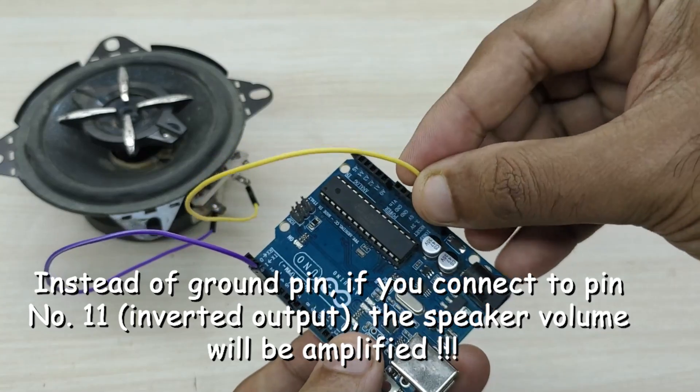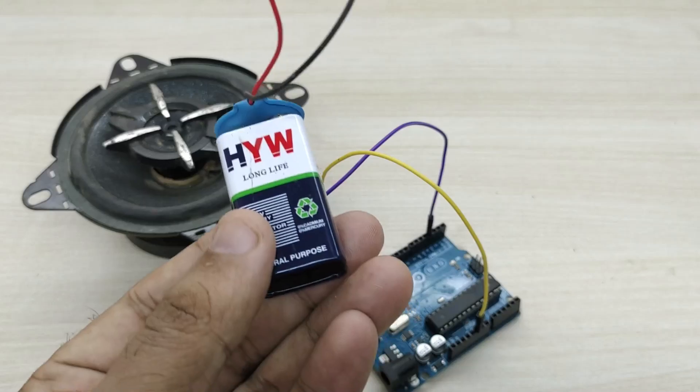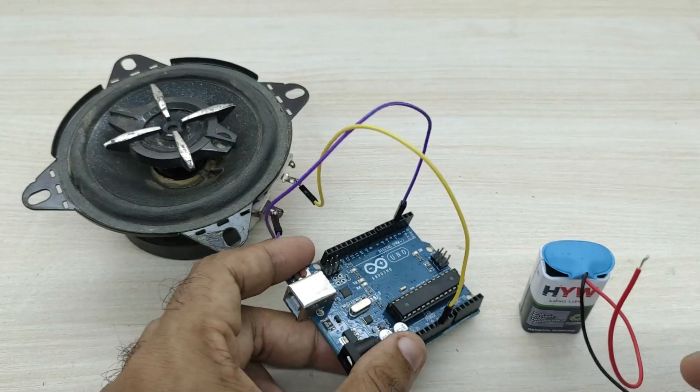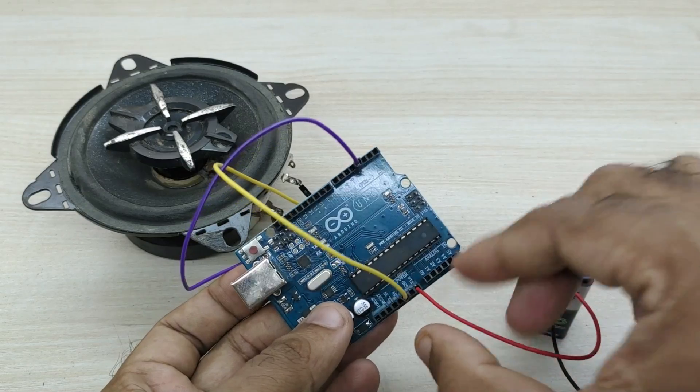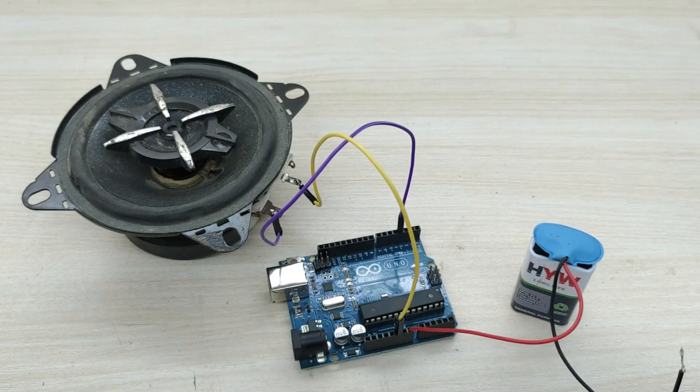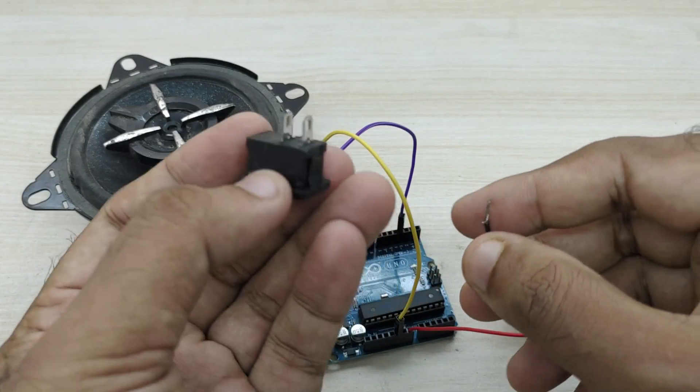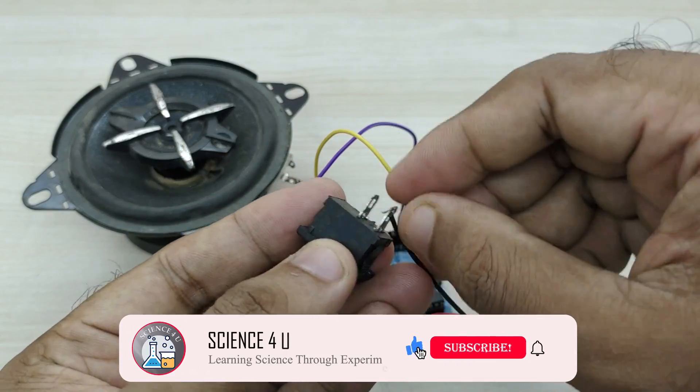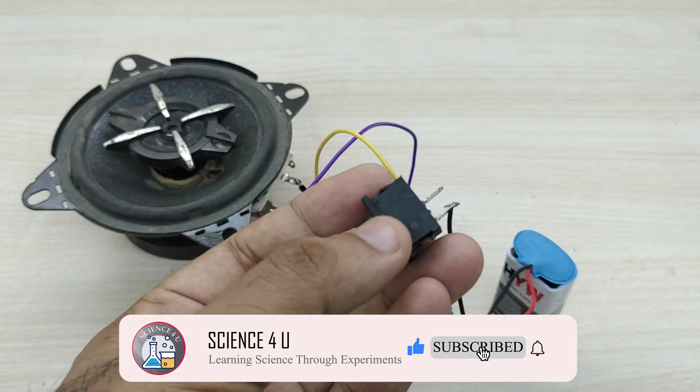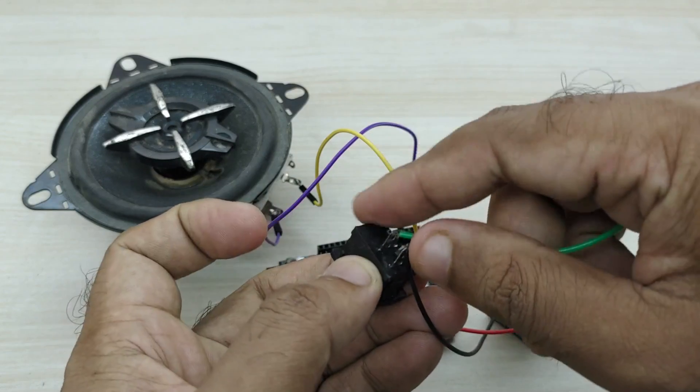Now, we need to connect a battery for powering the Arduino. I have taken a commonly available 9-volt battery. Connect the positive terminal of the battery to Vin pin of Arduino. Connect the negative terminal of battery to one end of rocker switch. Take a short strip of wire and connect the other end of switch to ground pin of Arduino.